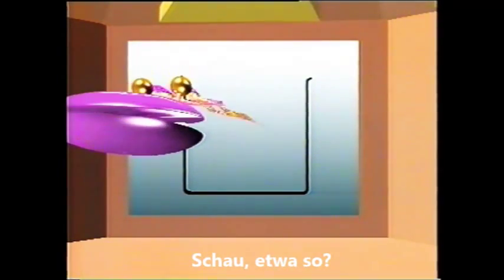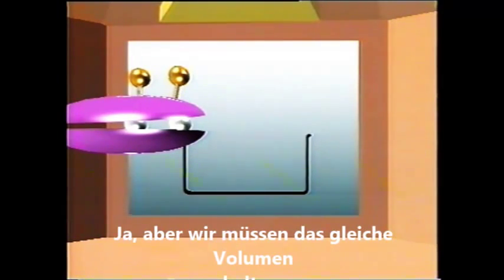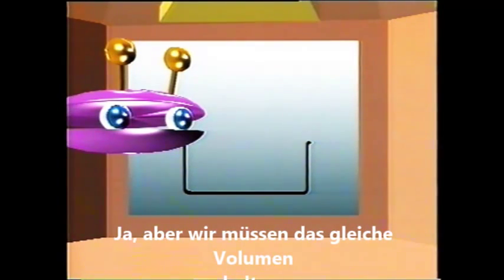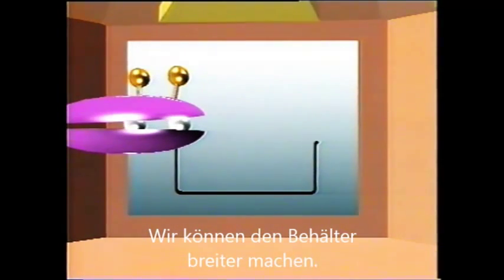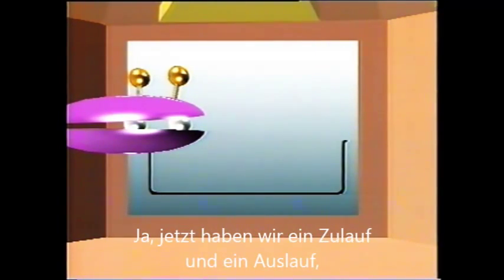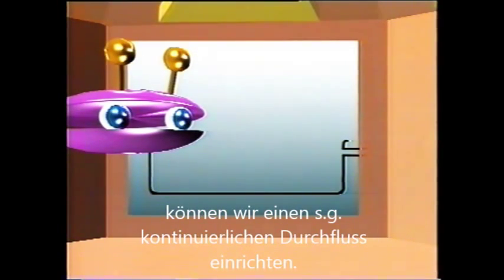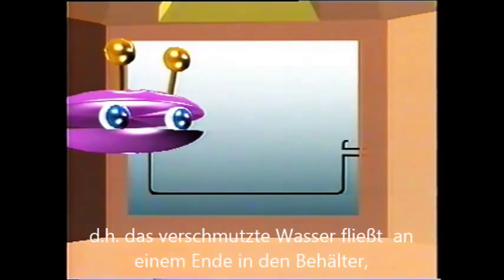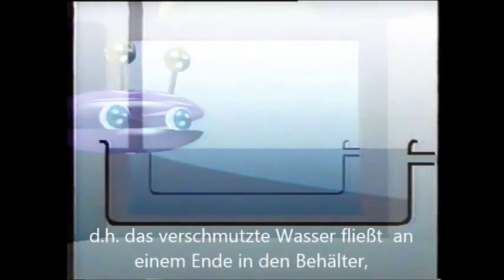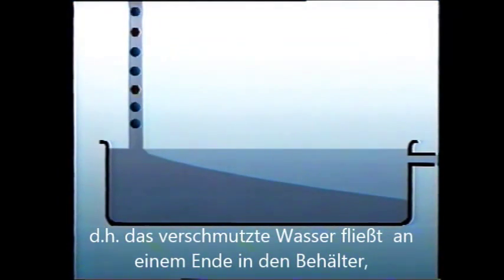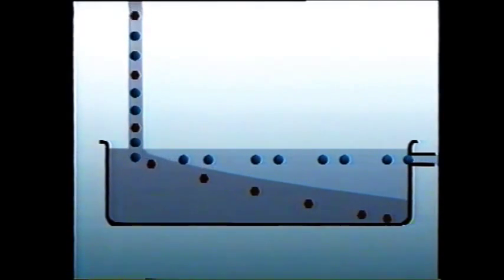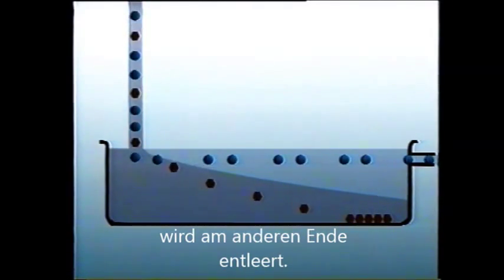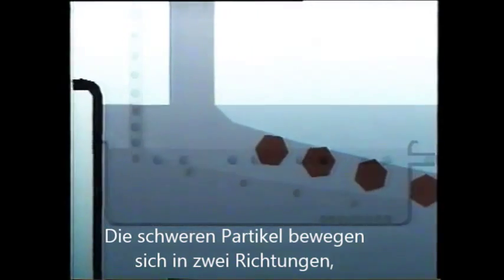Like this? Yes. But we need to keep the same volume. So what else can we do? We can make the vessel wider. Now, by adding an inlet and an outlet, we can arrange for what is called continuous flow. In other words, the mixture is fed into the tank at one end, and the lightweight component — in this case water — is discharged at the other.